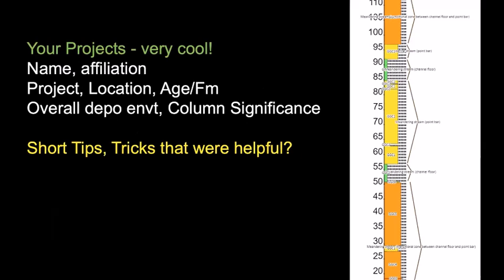We're going to start off with your projects, and we've got quite a few. Bottom line, they are very cool. We've picked out a few to go through — unfortunately we can't go through all of them, but we'll take about 25 minutes to cover some examples. As we go through these, please give your name, affiliation, what the project is about, its location, age information, overall depositional environment, and the significance. Please try to take about two or three minutes per example, and Casey will help drive us through. Toward the end, think about short tips or tricks you found helpful.